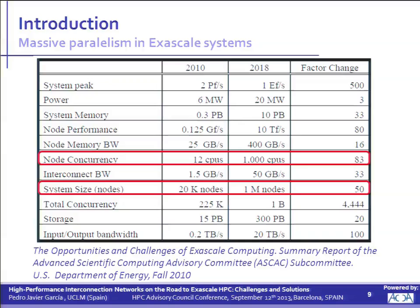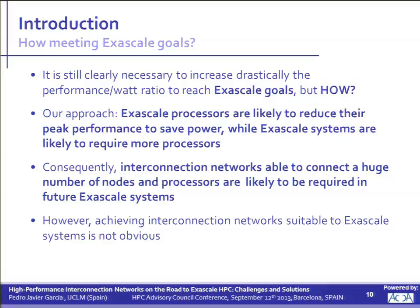So it's likely that Exascale systems will consist of many, many more processors. And in that case, we will have interconnection networks that should meet strong requirements regarding the number of nodes to be interconnected. It is necessary to have interconnection networks with extreme connectivity as a main requirement. However, achieving this level in interconnection networks is not obvious — fortunately for interconnection network researchers like me.